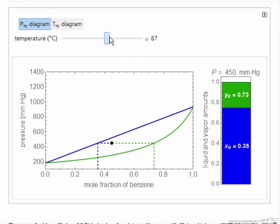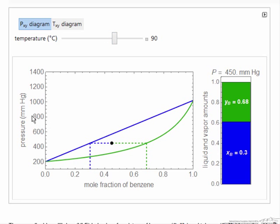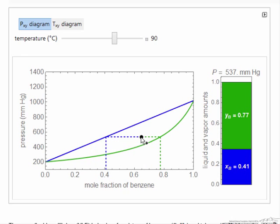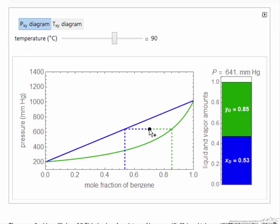Notice what we're changing is the curve on the pressure mole fraction diagram. We can move the point around to change both the pressure and the composition.